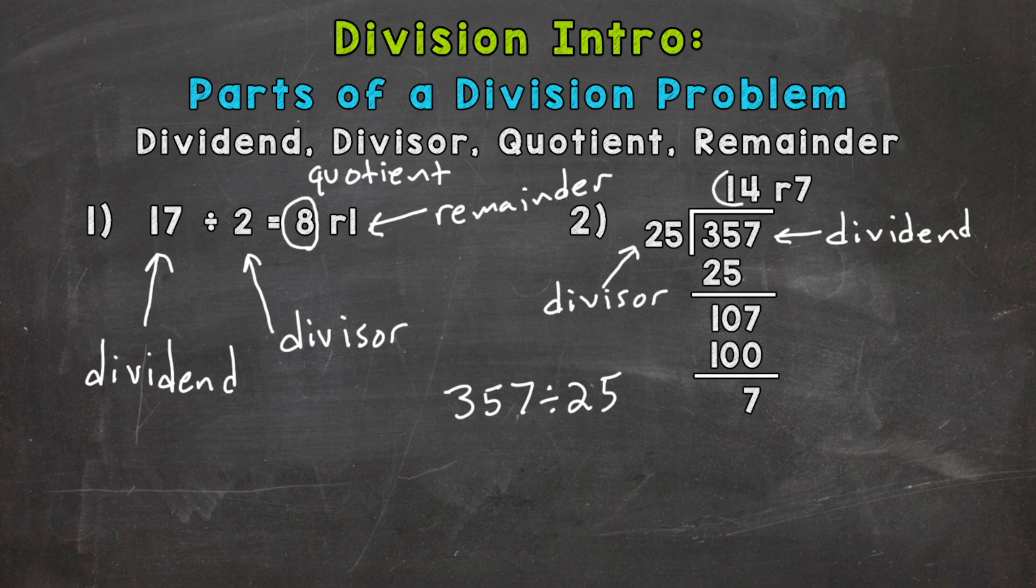This 14, this is our quotient. And we have seven left over, so that is our remainder.